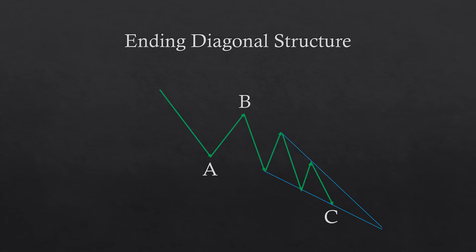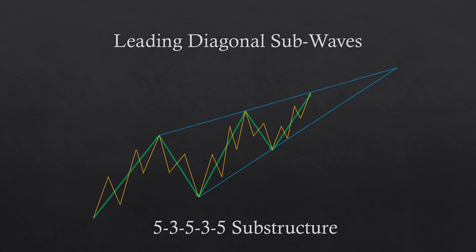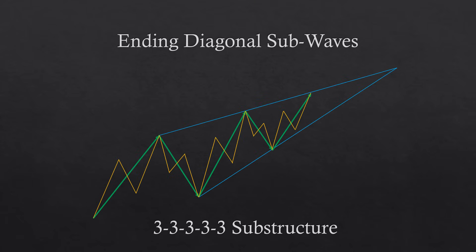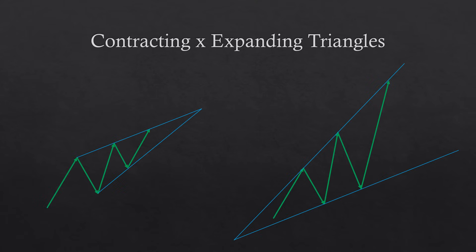Even though leading and ending diagonals have five waves, these waves sometimes respect peculiar patterns. Leading diagonals can be broken down into two patterns of five waves: the 5-3-5-3-5 pattern where five and three waves alternate, or a pattern where only three waves appear in each of the five waves of the triangle — a 3-3-3-3-3 pattern. Ending diagonals always respect the three-wave pattern as a rule. It's more common for leading and ending diagonal patterns to be contracting, but they can also be expanding. Whether contracting or expanding, the rules for subwaves remain constant.